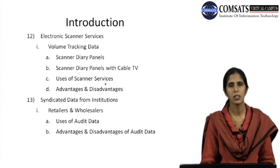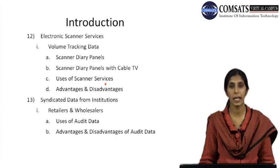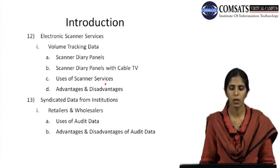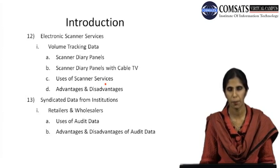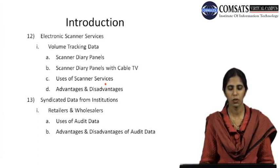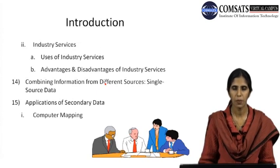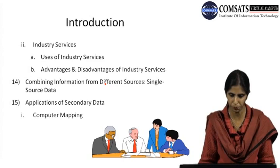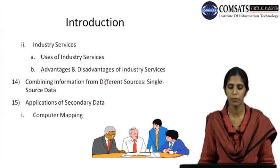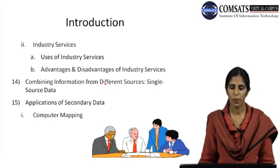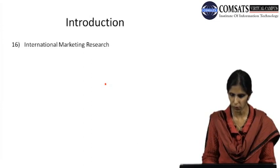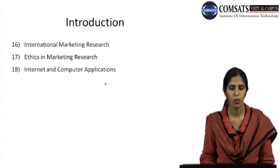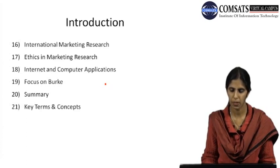There are very large companies such as OGDCL, Pakistan Tobacco Company, or PTCL. These are companies whose data is available and organizations can analyze that data for particular purposes. This data is also obtained through retailers or wholesalers, where we get audit data. Sometimes industrial services also provide information. We also talk about combining information from different sources — single sources versus group sources of data collection. The applications include computer mapping, international marketing research, ethics and marketing research, and internet and computer applications.